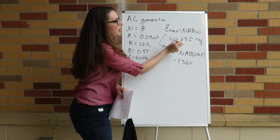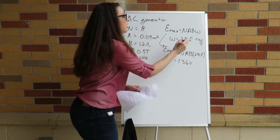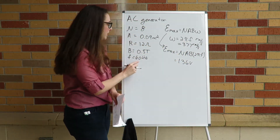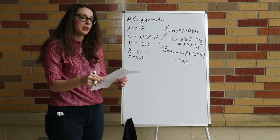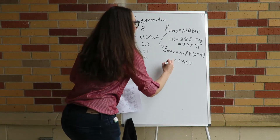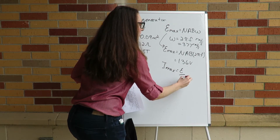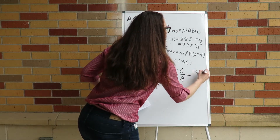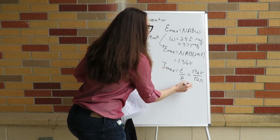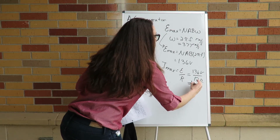Our angular frequency is 377 radians per second. So our maximum induced current is just that EMF divided by the resistance: 136 volts divided by 12 ohms, which equals 11.3 amperes.